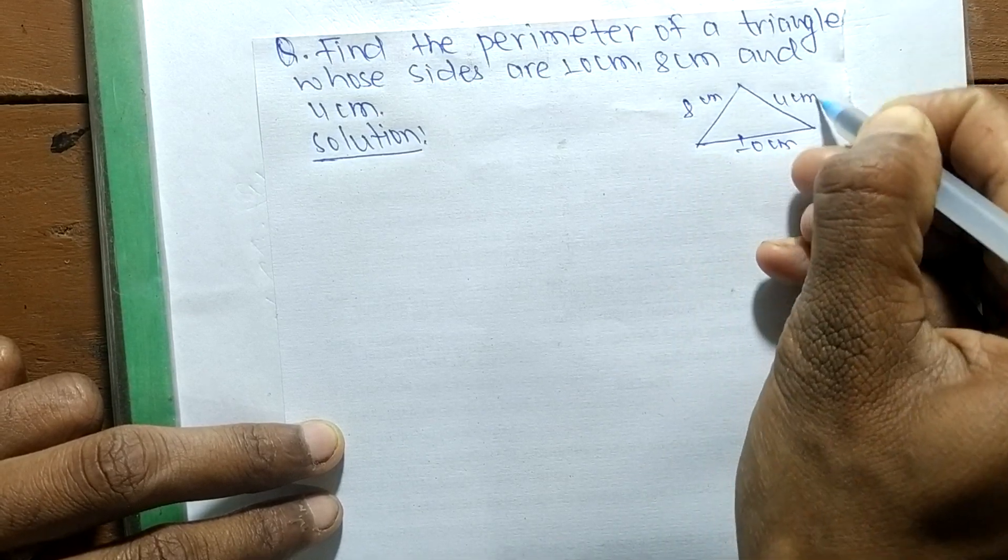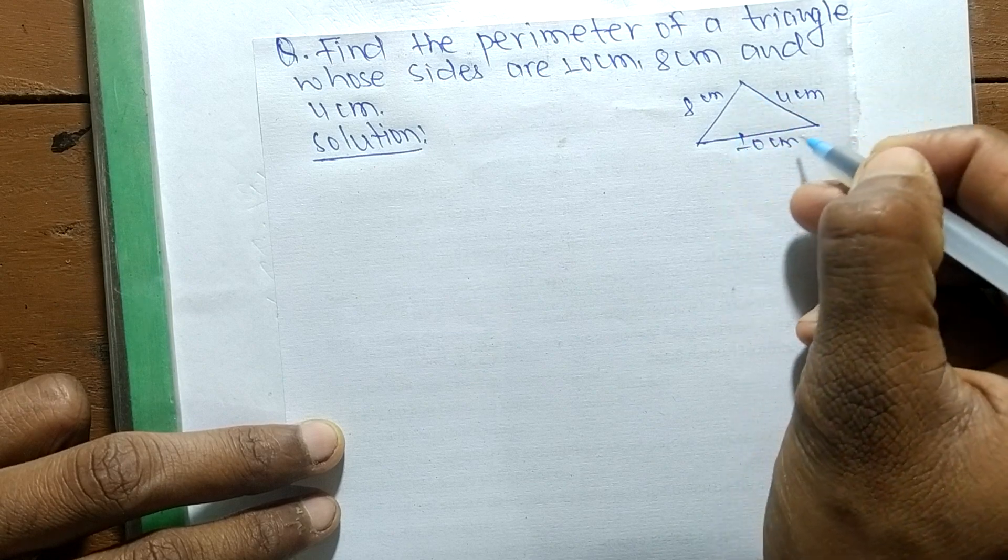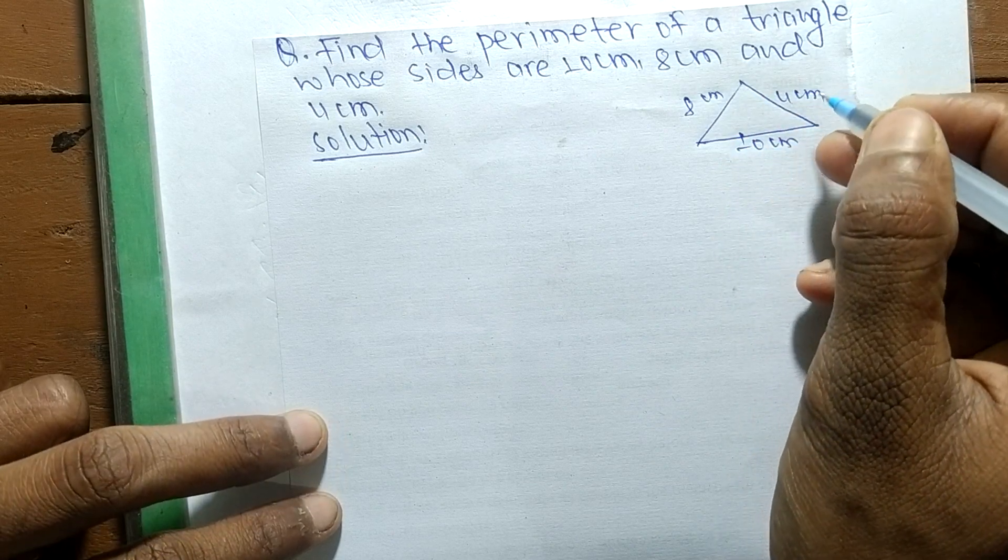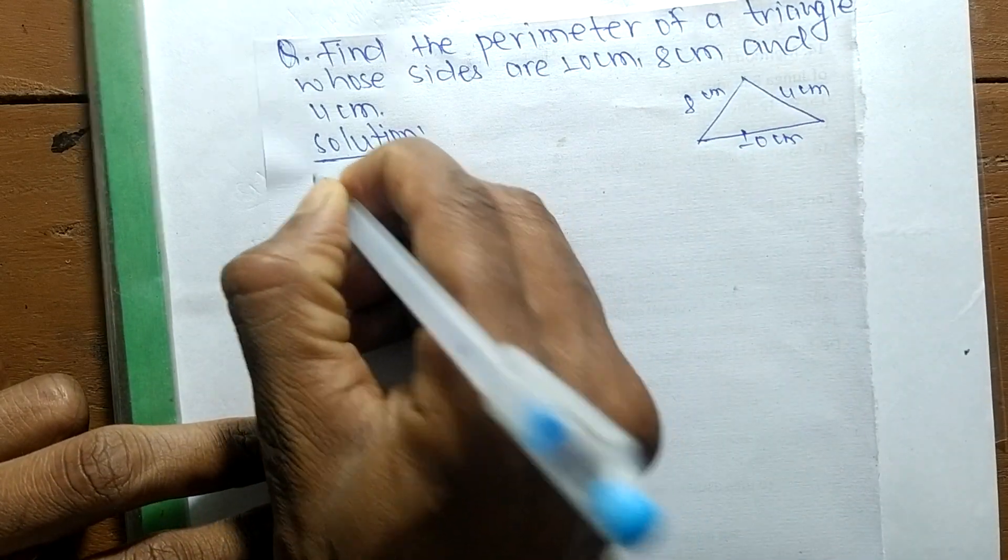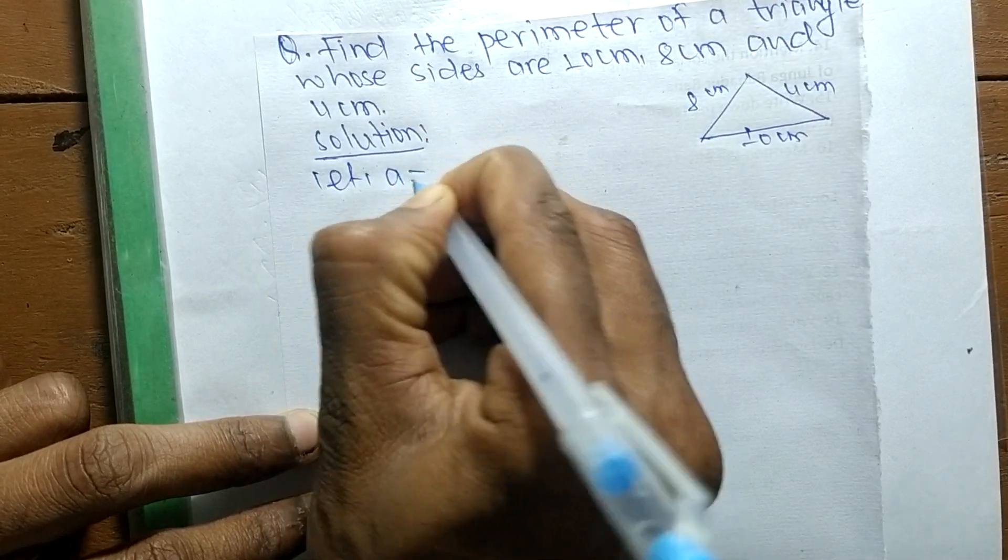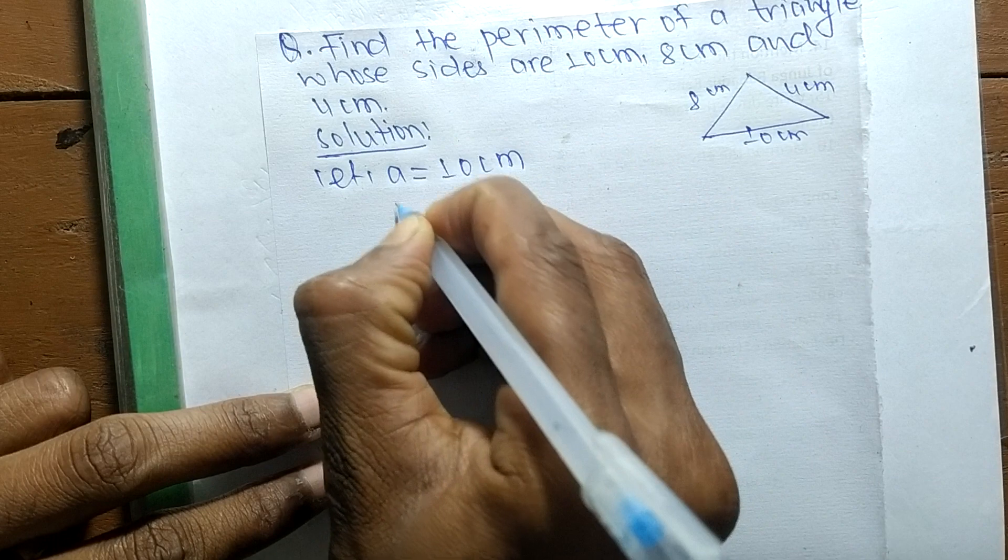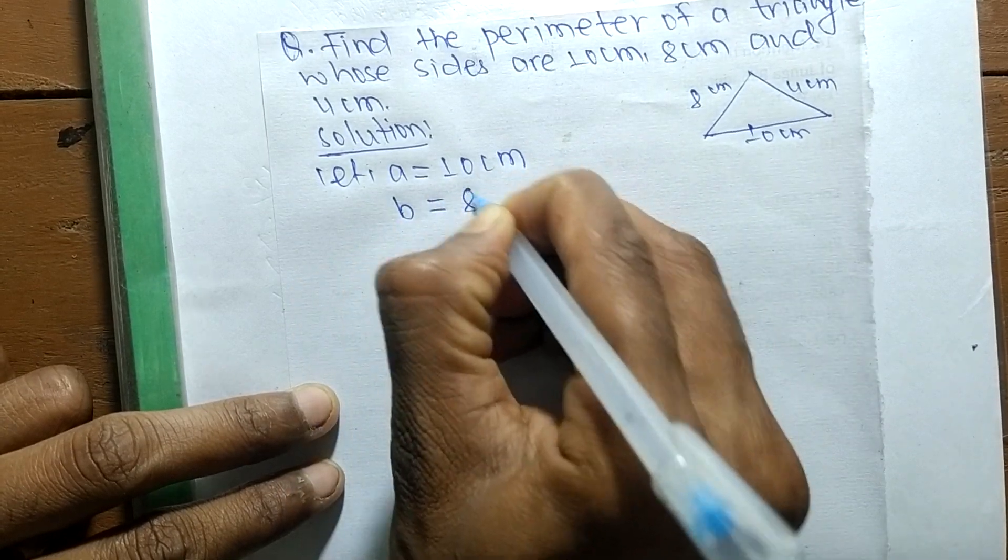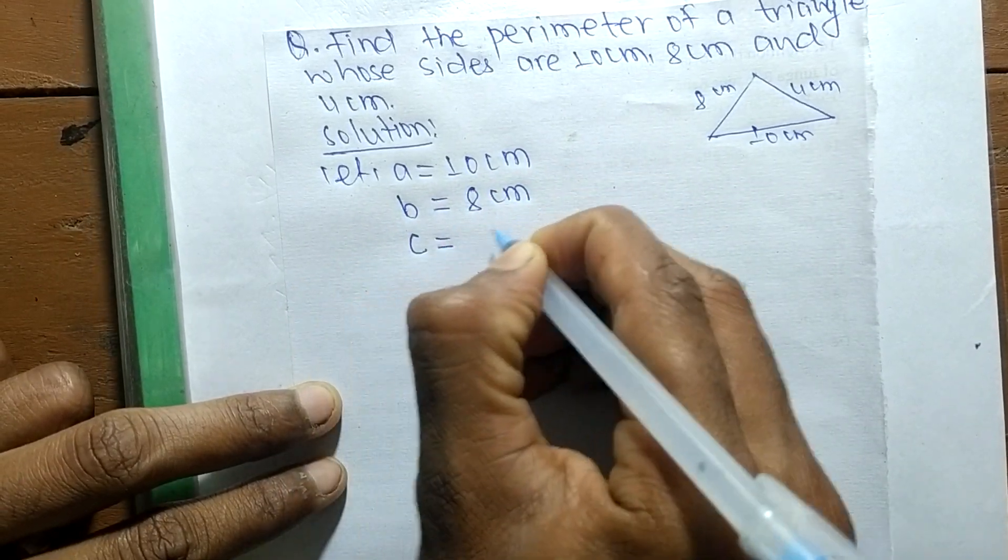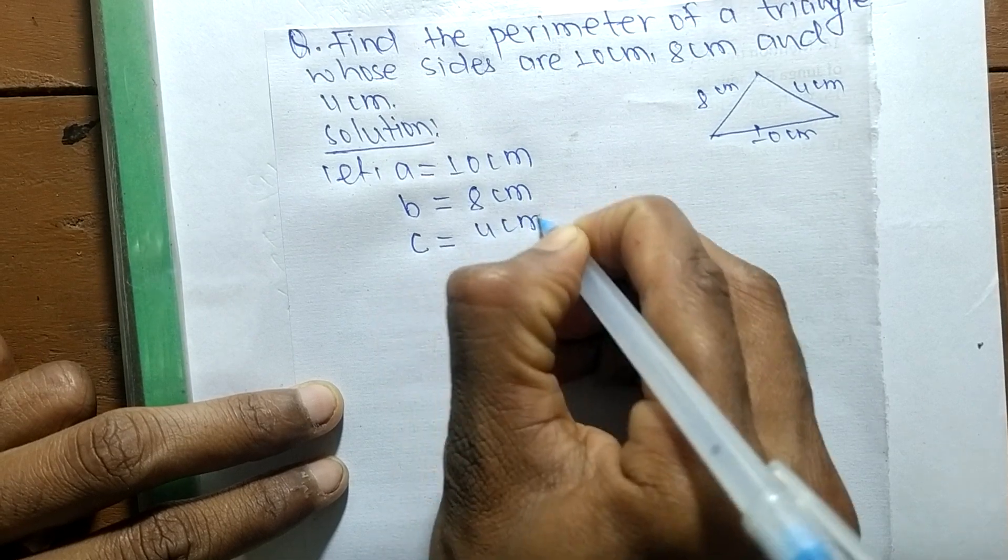We have to find out its perimeter. So suppose let A is equal to one side which is 10 cm, like as B is equal to 8 cm, and C is equal to 4 cm.